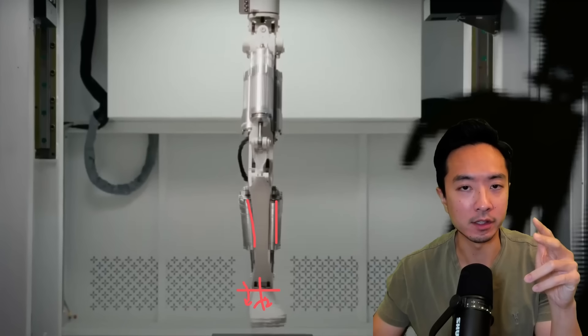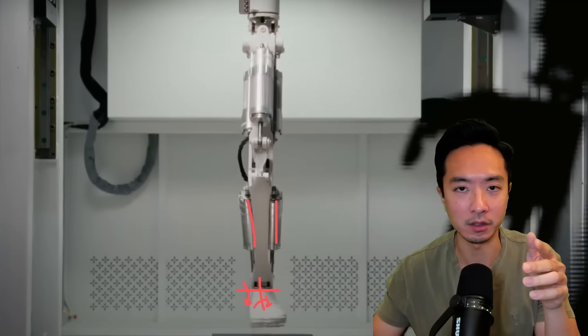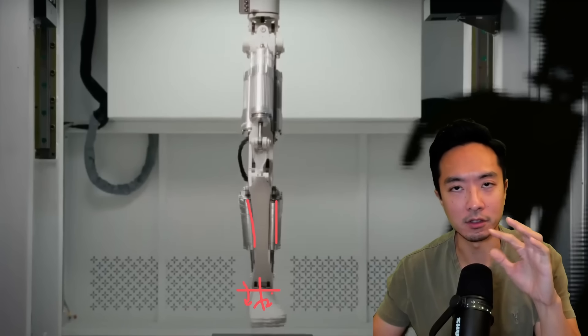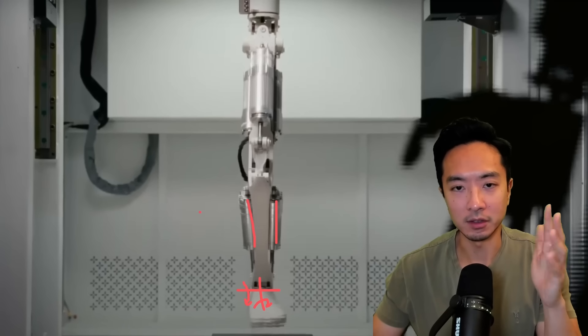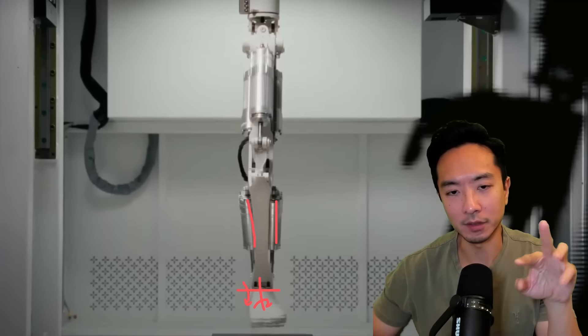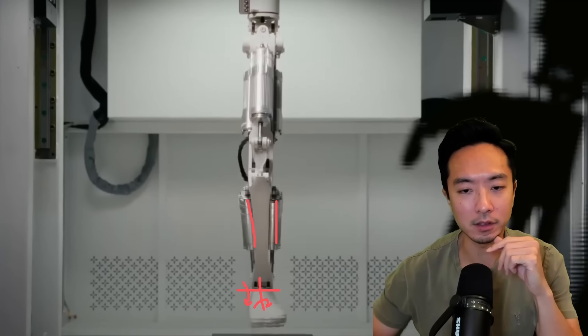And as we talked about in some of my previous videos with the foot design, typically you have to have the two degrees of freedom for stability, especially if you're standing on one leg. Because simplified robots that have only five degrees of freedom that only have the pitch without the roll tend to have more of a stability issue. So having both degrees of freedom there helps with that.